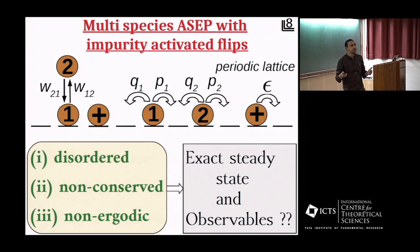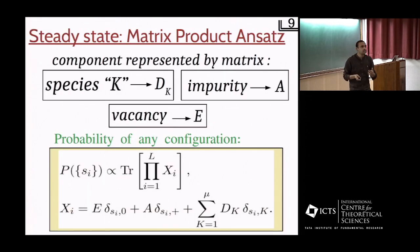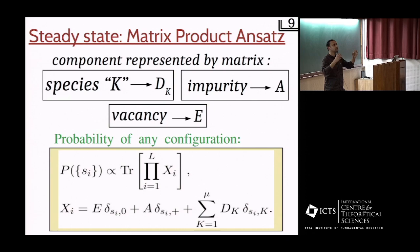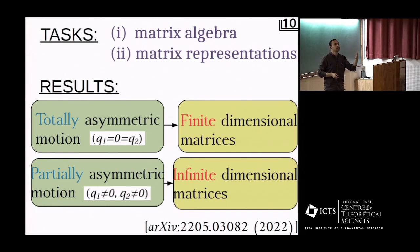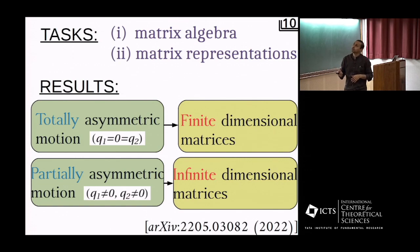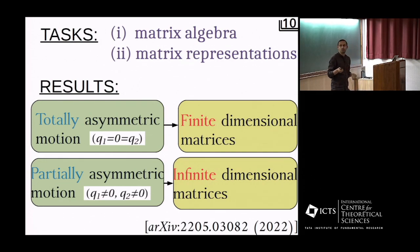The question we now ask is: can we find out the exact steady state and consequently calculate observables of interest? The answer is yes — we can calculate the exact steady state of this model using a technique called the matrix product ansatz. The idea is to represent different species, impurities, and vacancies as non-commuting matrices. A configuration of particles then becomes a string of matrices, and the probability of a configuration is given by the trace of this product of matrices. Our task is to find out the relations these matrices satisfy in the steady state — the matrix algebra — and from that find the matrix representations in terms of input parameters like hop rates and flip rates. For the totally asymmetric case we obtain finite-dimensional matrices, and for the partially asymmetric case we obtain infinite-dimensional matrices.